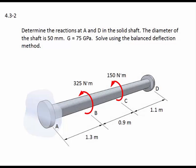Problem 4.3-2. Determine the reactions at A and D in the solid shaft. The diameter of the shaft is 50 millimeters. The shear modulus G is equal to 75 gigapascals. Solve using the balanced deflection method.